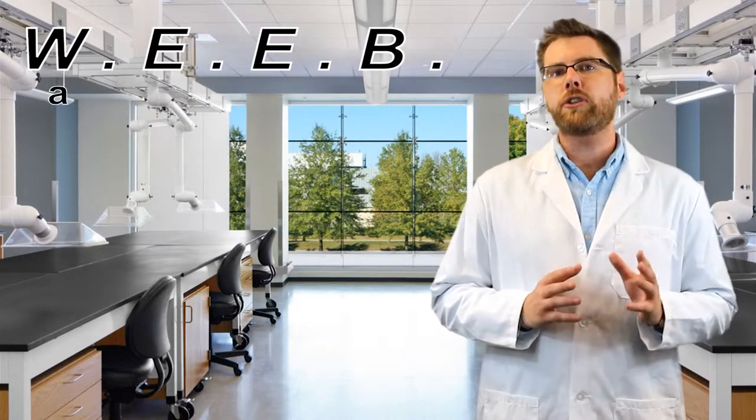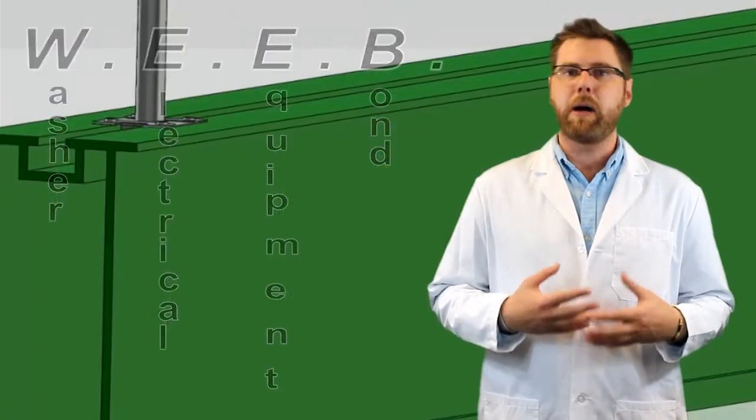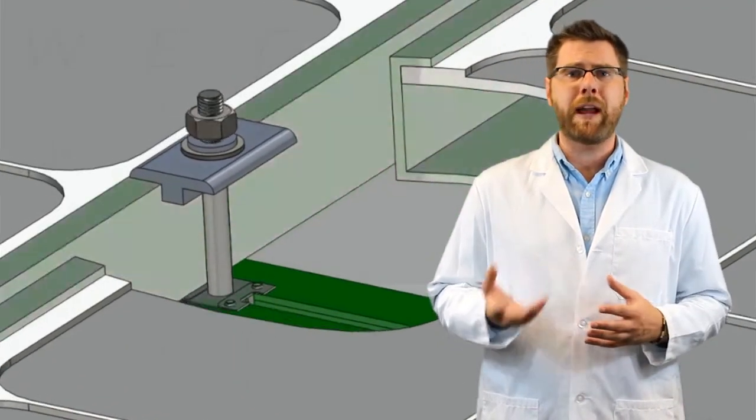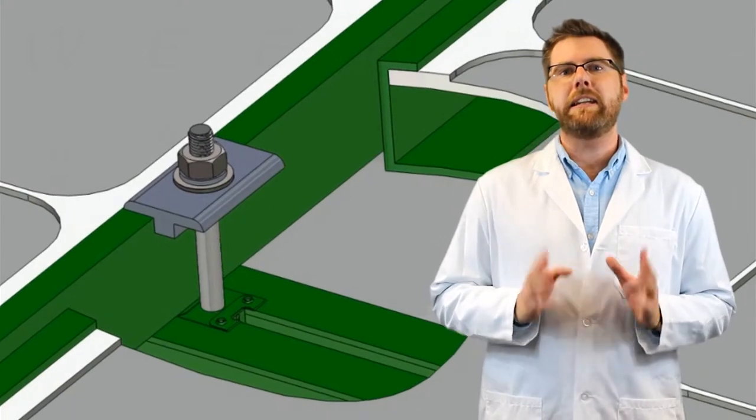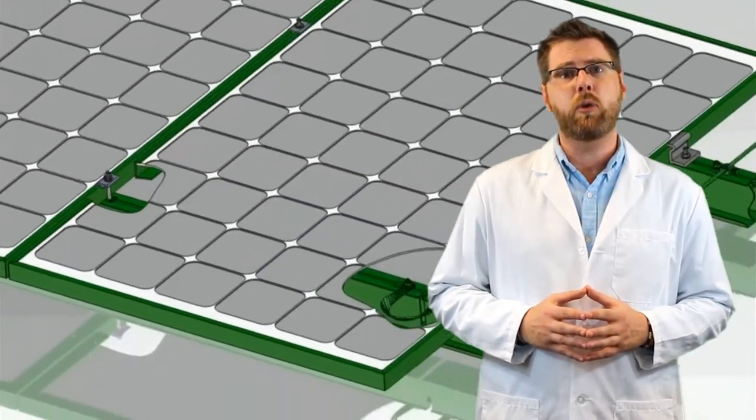WEEB stands for washer-electrical equipment bond. It's a device that can be used to bond or electrically connect together all the separate metal pieces in a PV array - your modules and your rails. This allows significantly less copper wire to be used in connecting your system to earth ground.